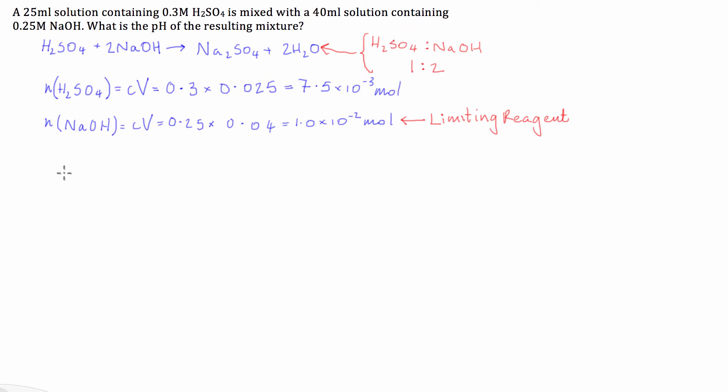it's going to be 1 is to 2 so if we have H2SO4 is to NaOH we've got 1 is to 2 so if we then go, this is instead of being 2 it's going to be 1.0 times 10 to the negative 2 we're going to need 5 times 10 to the negative 3 so that's exactly half of that.